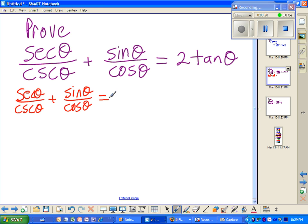So I go secant of theta over cosecant of theta plus sine of theta over cosine of theta. Now, I want to simplify. I'm trying to get to tangent. So I see that we have a tangent right here.